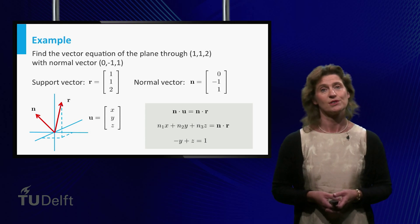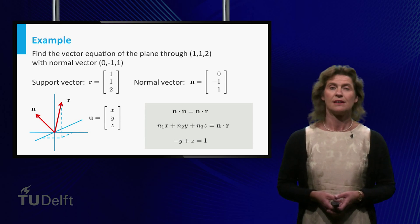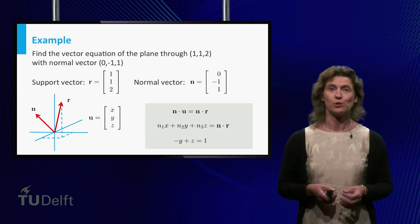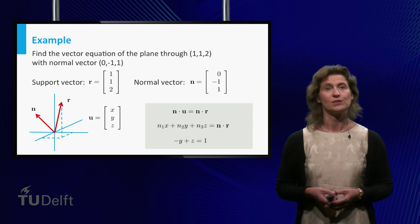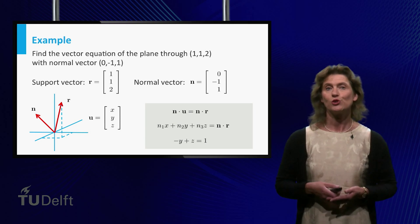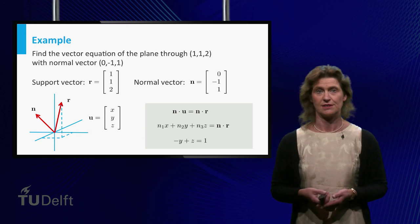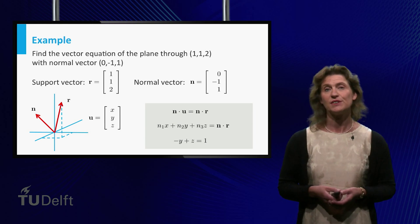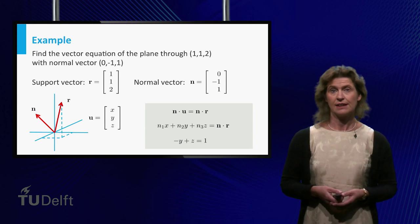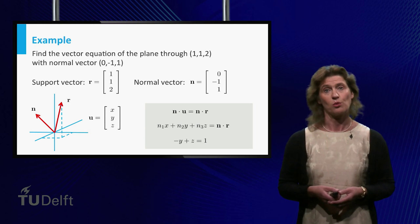For our example, you get minus y plus z equals 1. This is called the linear equation of the plane. So this is what you get by writing out the inner products of the vector equations in terms of the components of the vectors. As you can see, the normal vector is immediately visible in this equation as the coefficients of x, y and z.